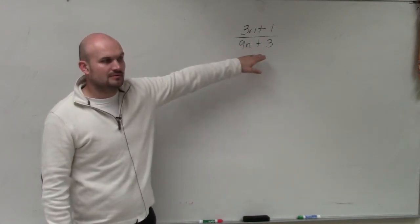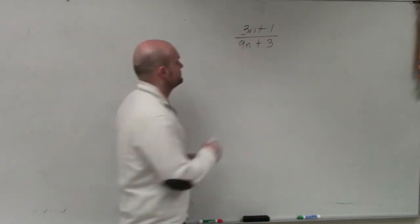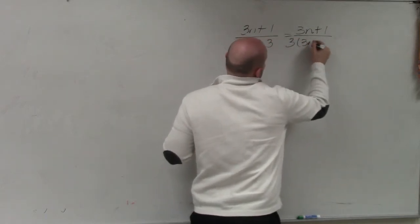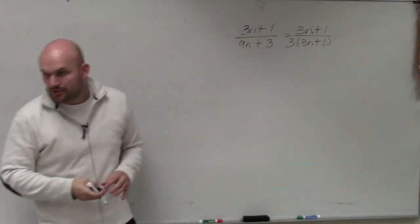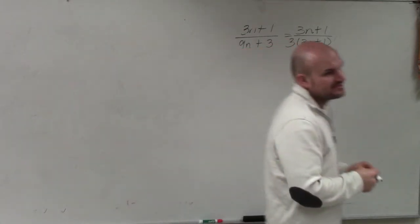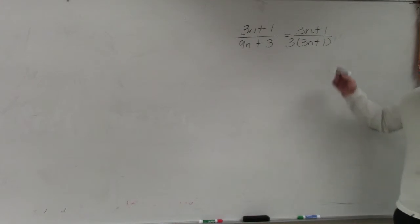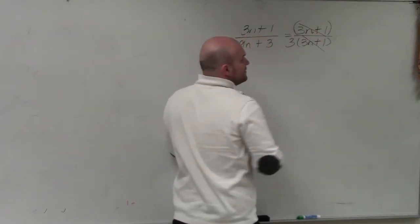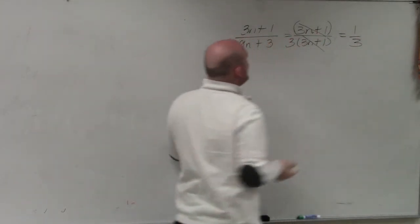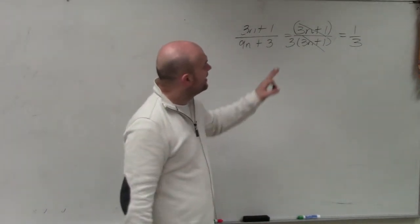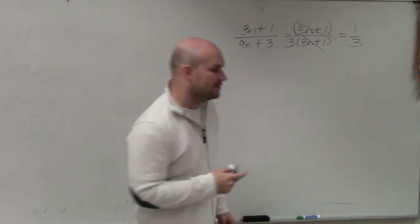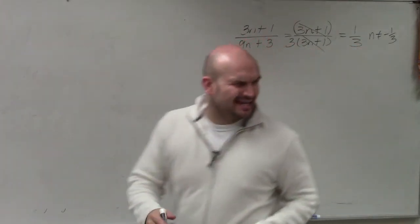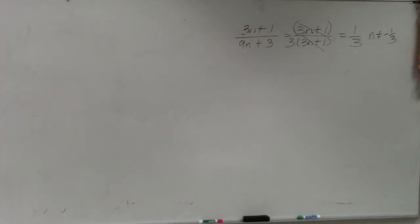How about the denominator — is there something we can factor out? Yes, 3. So if I factor out a 3, I have 3n plus 1 divided by 3 times (3n plus 1). Do you see how that works? Now I have an expression divided by another expression that are exactly the same — those divide to 1. So my final answer is 1 third, where n cannot equal negative 1 third. I'll explain why n cannot equal negative 1 third in just a second.